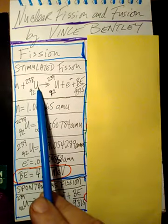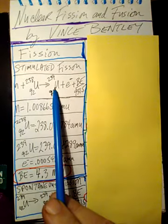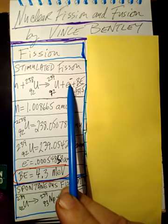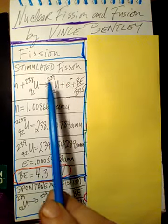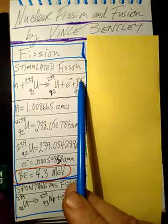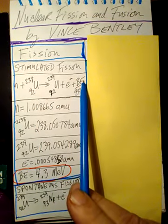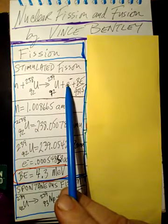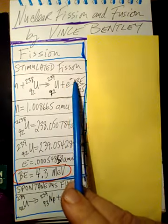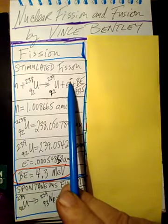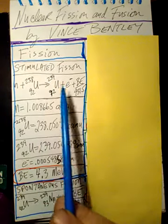A neutron will come into a uranium isotope and you'll get a new uranium isotope with one more neutron, but an electron will pop out of that uranium isotope. This is called the binding energy, which will basically be the energy of this electron that's coming out of the original uranium isotope.